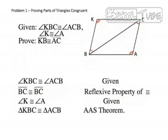So now we can say that triangle KBC is congruent to triangle ACB by the angle-angle-side theorem.